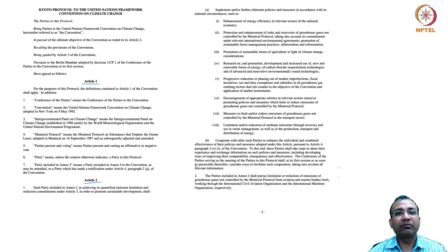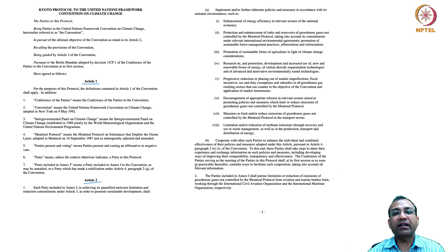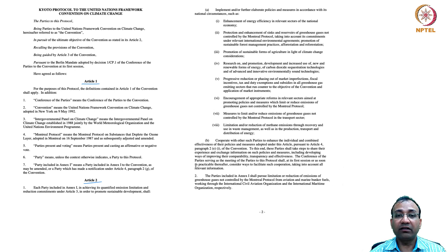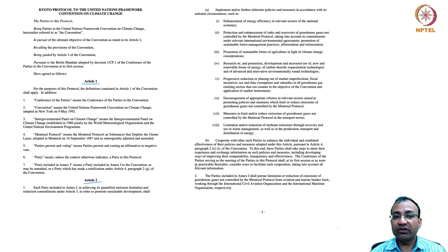As it reads: the parties to this protocol being parties to the United Nations Framework Convention on Climate Change, hereinafter referred to as the Convention, in pursuit of the ultimate objectives of the Convention as stated in its Article 2, recalling the provisions of the Convention being guided by Article 3 of the Convention pursuant to the Berlin mandate adopted by Decision 1 CP.1 of the Conference of the Parties to the Convention at its first session, have agreed as follows.